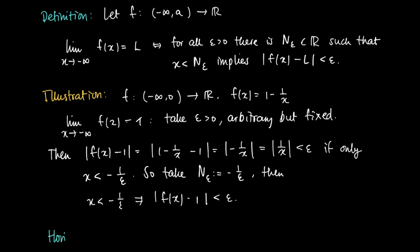Well, if the function value is smaller than ε, then we call this L the horizontal asymptote. Here y = L is called the horizontal asymptote for x going to negative infinity.